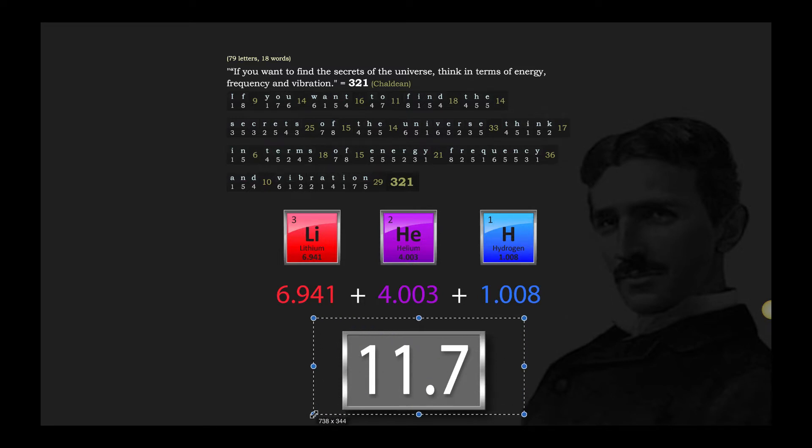When we break these numbers down here on this statement, 321, it gives us lithium, helium, and hydrogen. The third element, the second element, and the first element. And these atomic weights, when you add those together, like these people working as a team, you're going to end up with the number 11.7. If you've studied the pyramids, you know how important 756 feet is, because that's the measurement of one side of the base of the Great Pyramid of Giza. And 756 can be read as 711.